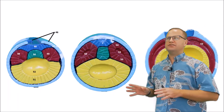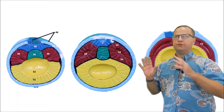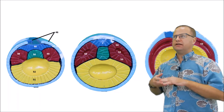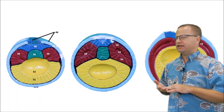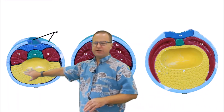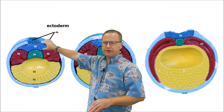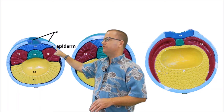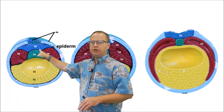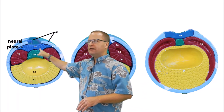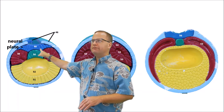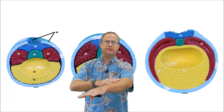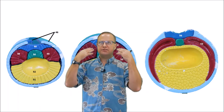So we've just gone through gastrulation, where we created the three tissue types: endoderm, ectoderm, and mesoderm. Now let's take a look at what happens in the next developmental stages. Starting on the left-hand side, you can see an embryo that has ectoderm. Ectoderm is actually divided into two parts: the epiderm, which will form the surface of the skin, and something called neural plate. So the same tissue that goes on to make up the surface of your skin will actually make up your brain and spinal cord.